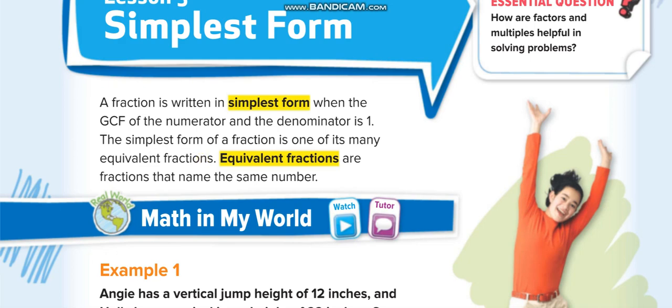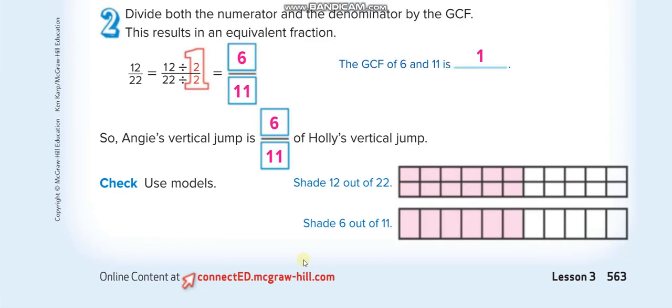The simplest form of a fraction is one of its many equivalent fractions. You see guys, when you convert a fraction into simplest form, still it is equal to the actual fraction. Like here, this is 12 over 22, total parts are 22, and out of 22, 12 are shaded. When you convert it, now total parts are 11, and out of 11, only 6 are shaded. If you see, the shaded area is still same in both figures.